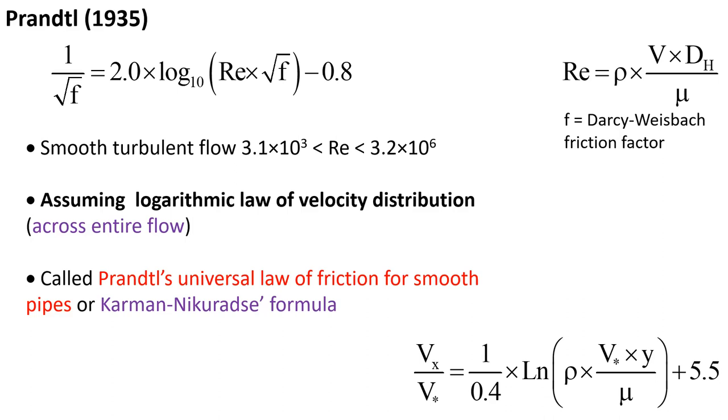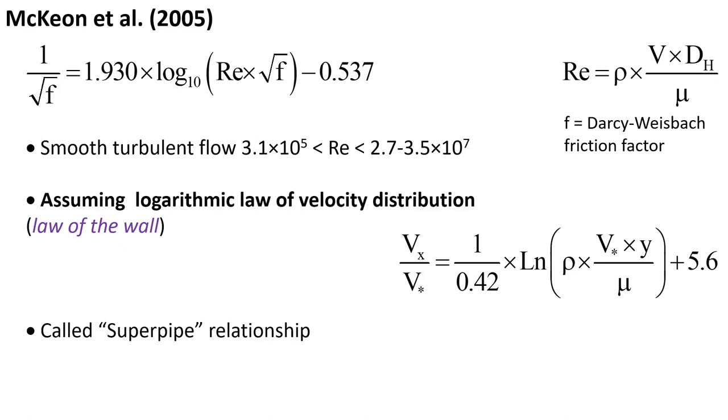More recently, superpipe data have been able to extend this relationship with Reynolds number up to 10^7, assuming a logarithmic law of velocity dispersion next to the wall, the so-called law of the wall.